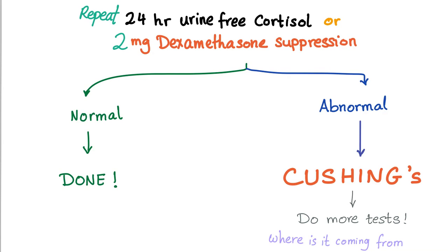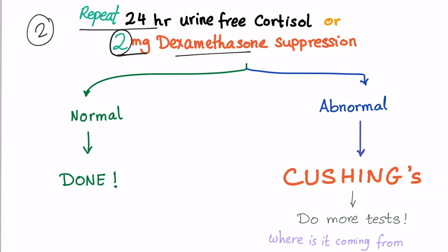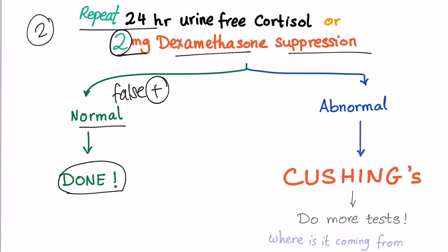Step two: if the first test is abnormal, we can repeat the 24-hour urine free cortisol, or we can increase the dose to two milligrams of dexamethasone suppression test. If the result is now normal, we are done — the previous abnormal test was a false positive.